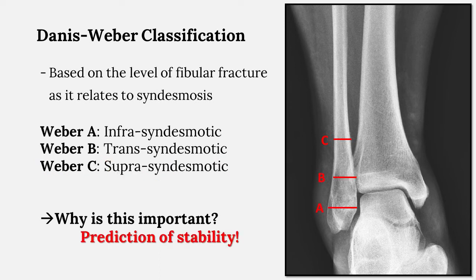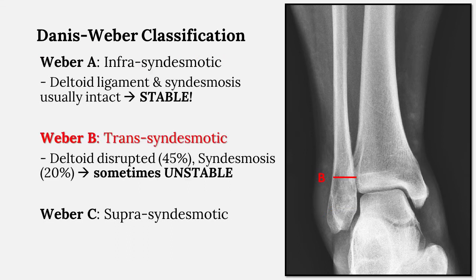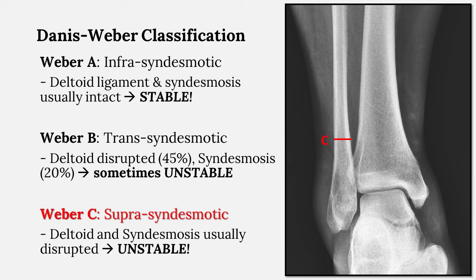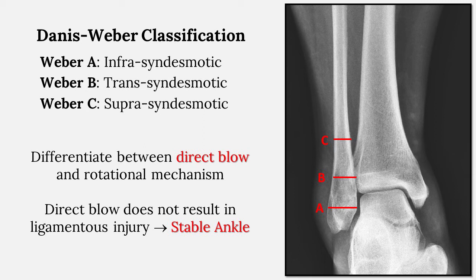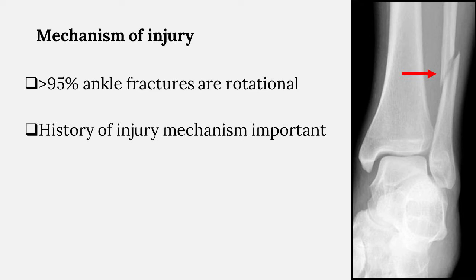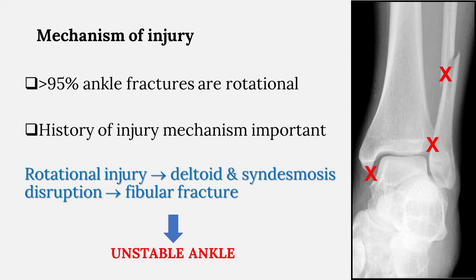The level of the fibula fracture often predicts stability or instability of the ankle joint. Weber A fractures typically are stable injuries — the deltoid ligament and syndesmosis are typically intact and these can be treated without surgery. Weber B fibula fractures are often associated with an injury to the deltoid ligament and/or the syndesmosis; they are often unstable and may require surgery. Weber C fractures typically present with injury to the deltoid ligament and the syndesmosis, leading to instability and often requiring surgery. Ankle fractures are caused by a rotational mechanism, but the fibula can be fractured by a direct blow, which does not result in ligamentous injury and the ankle remains stable. An x-ray demonstrating a Weber C fracture with rotational mechanism represents injury to the deltoid ligament and syndesmosis — an unstable injury that requires surgery.